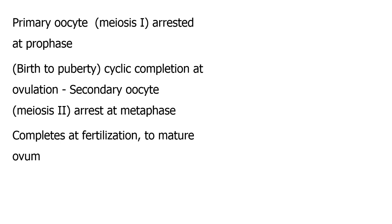The primary oocyte undergoes the first meiotic division, which is arrested at prophase one. This usually happens around birth and takes many years until puberty. Then there is cyclic completion at ovulation — when ovulation occurs, there is completion of first meiosis. You then form the secondary oocyte, which is arrested at the second meiotic phase, specifically at metaphase two.